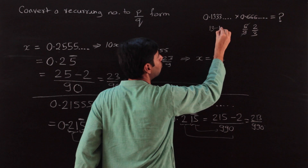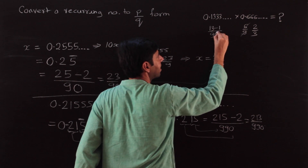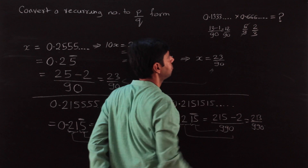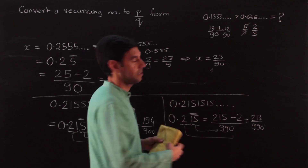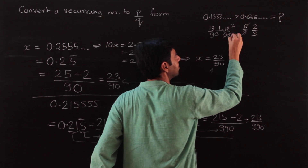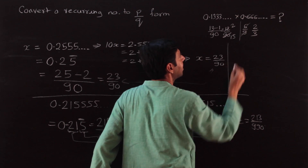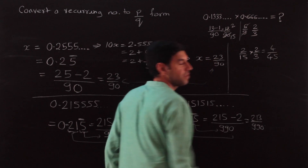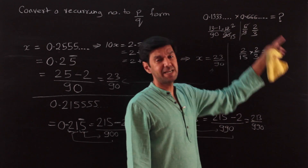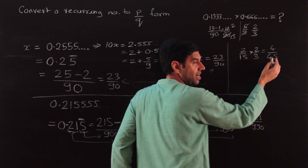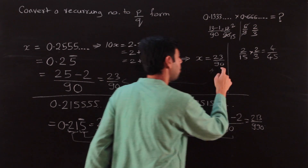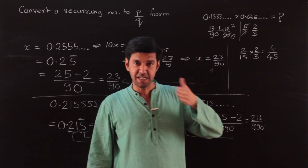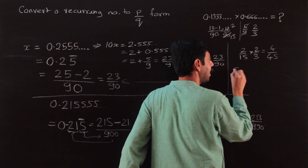Now let's finish the original example. For 0.1333...: 3 is recurring, 1 is non-recurring, so it is (13 − 1) / 90 = 12/90, which reduces to 2/15. For 0.6666... we had 2/3. So the multiplication is 2/15 × 2/3 = 4/45. The advantage of this whole process is that denominators are always multiples of 9, or 9 with zeros, or a series of 9s.